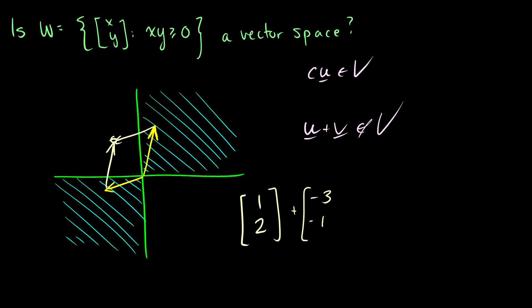This also has to be minus one. So remember, we have to have that x times y is greater or equal to zero. So when we choose our vectors here, we have to make sure that both of them are in our vector space. So we're good here because one times two is greater than zero. We're good here because negative three times negative one is greater than zero.